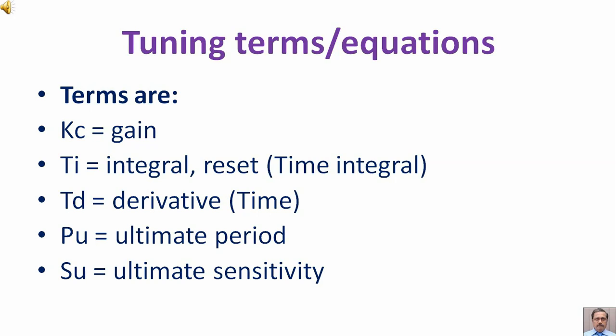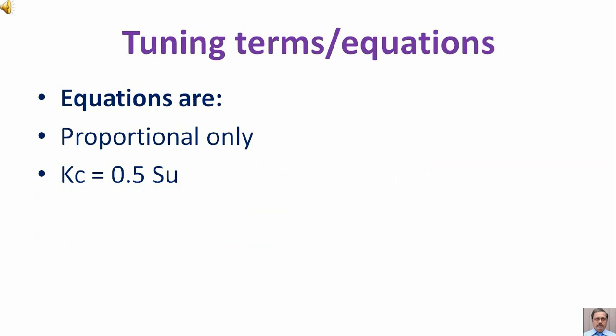The equation for proportional-only system is K subscript C equal to 0.5 S subscript U.